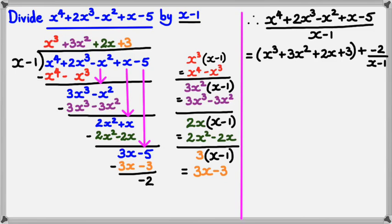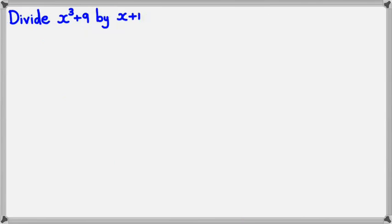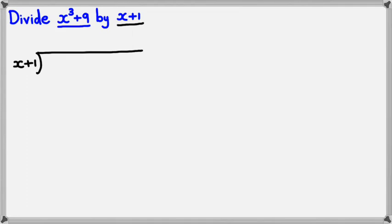Okay, one more example. This time I want to divide x cubed plus 9 by x plus 1. The dividend is x cubed plus 9, and the divisor is x plus 1. Now, I'm ready to set it up. You might wonder why I've got such a long line there — that's because there are no x squared terms and no x terms in the dividend. So, I've got to write it up as x cubed plus 0x squared plus 0x plus 9.